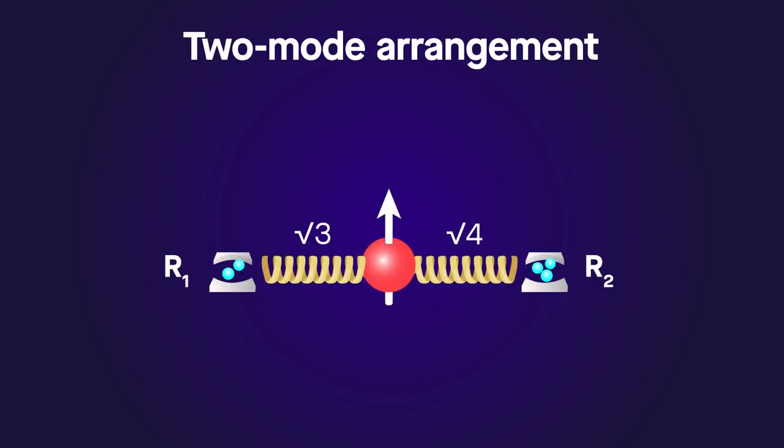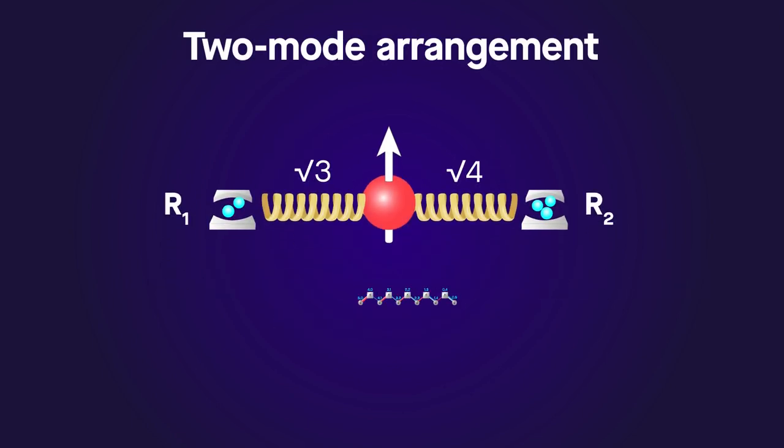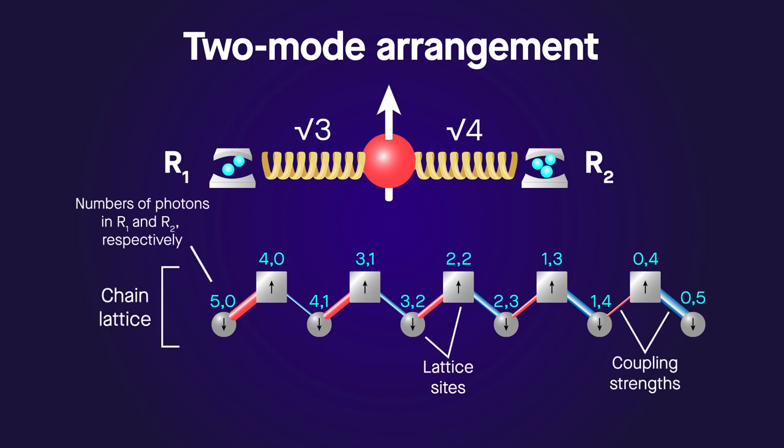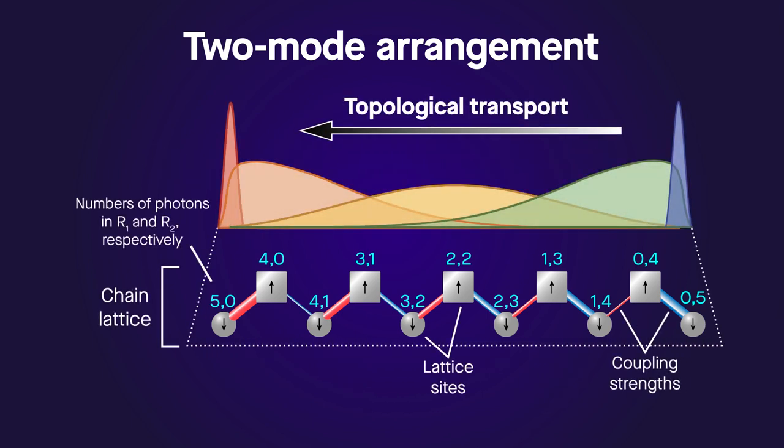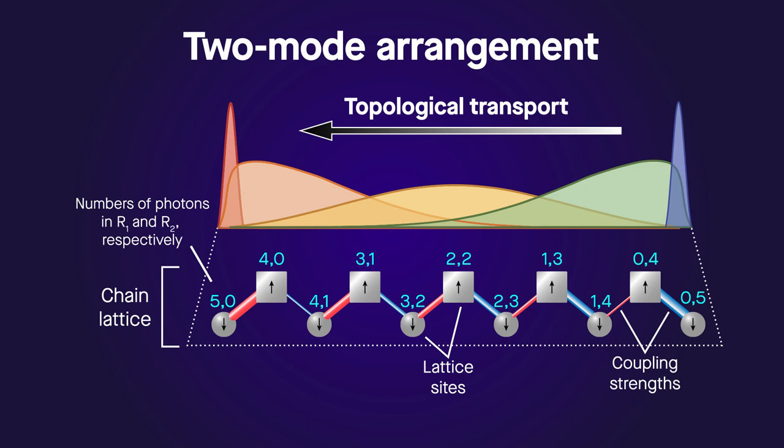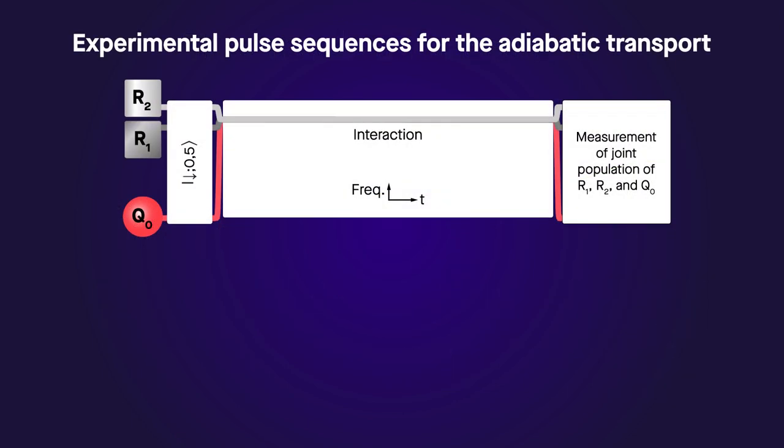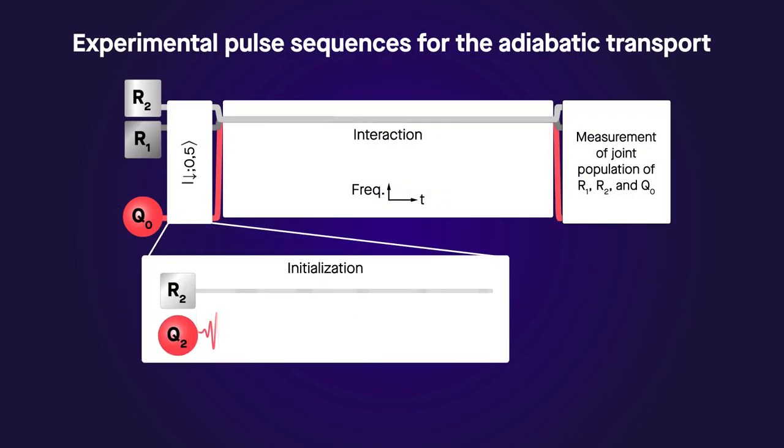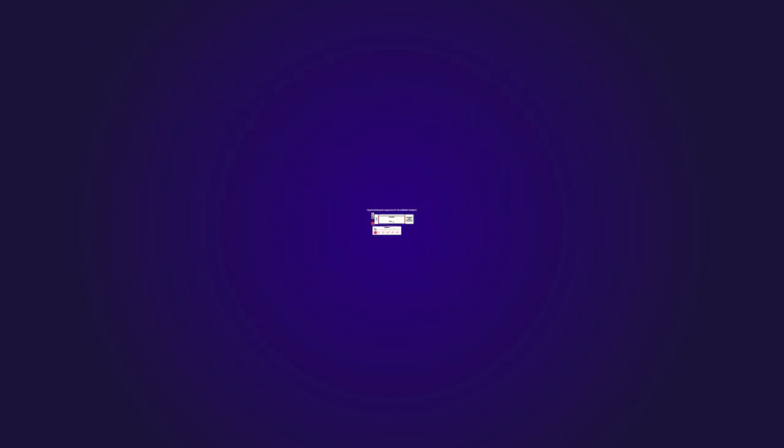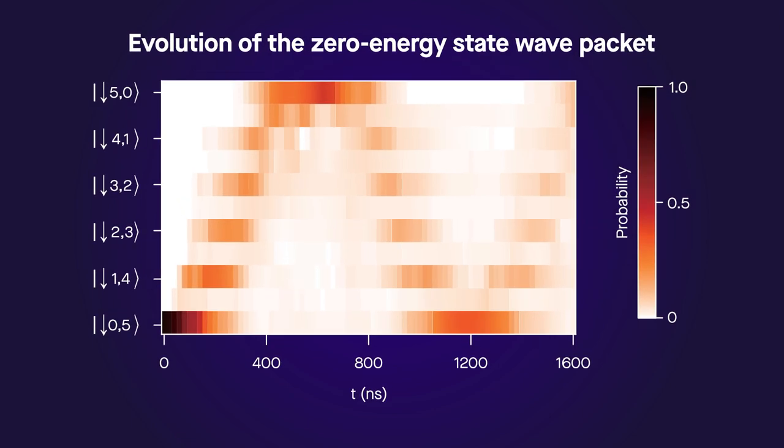In a two-mode arrangement, generated states are coupled in a one-dimensional chain. A topological zero-energy state is located around lattice sites where the coupling strength of the resonators is the same, representing the topological edge. In experiments, varying the coupling strengths sinusoidally enabled the adiabatic transport of this topological edge state. This was observed as the oscillation of photons between the two active resonators.